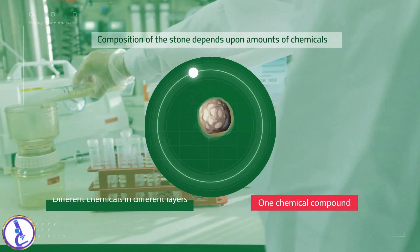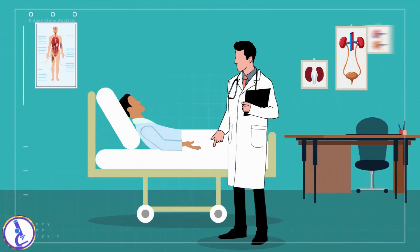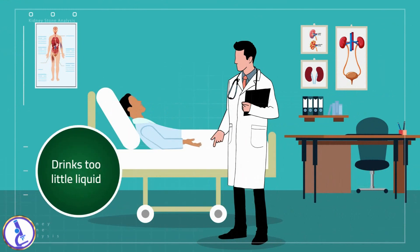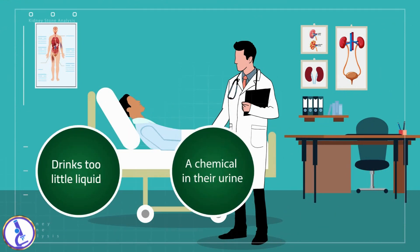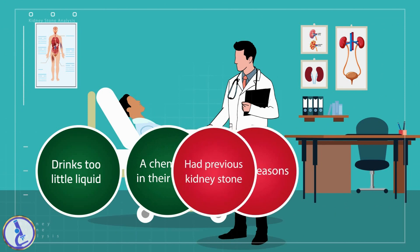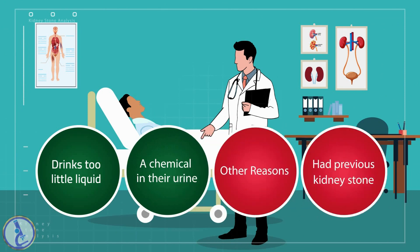The composition of the stone depends upon what excessive amounts of chemicals are present; it may be all one chemical compound or have different chemicals in different layers. Not everyone who drinks too little liquid or has an excess amount of a chemical in their urine will form kidney stones. Those who have had one kidney stone are at an increased risk for developing additional stones.